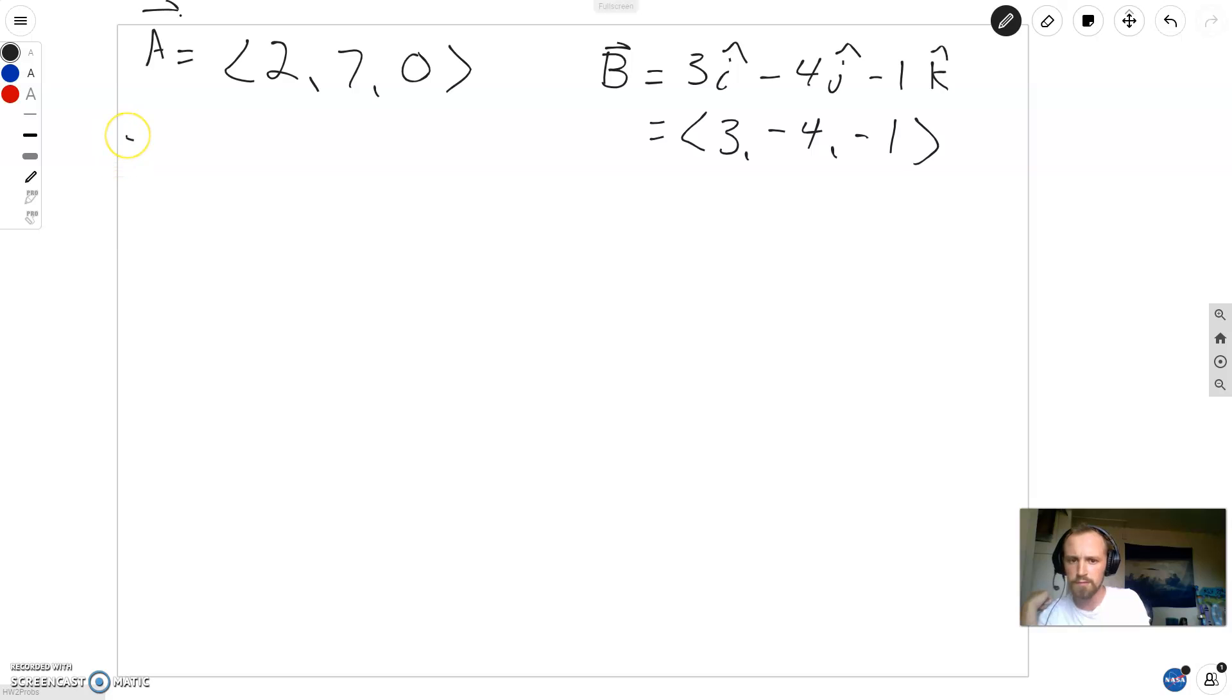So part i, we want the magnitude of vector A. Easy enough, when we want the magnitude of something, we take the square root of the sum of the squares of each component. What I mean is, we take the square root of 2 squared plus 7 squared plus 0 squared equals the square root of 53, whatever that turns out to be.